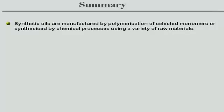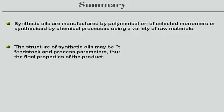Let us summarise the main topics of this lesson. Synthetic oils are manufactured by polymerisation of selected monomers or synthesised by chemical processes using a variety of raw materials. The structure of synthetic oils may be tailored by judicious choice of feedstock and process parameters, thus allowing considerable control over the final properties of the product.